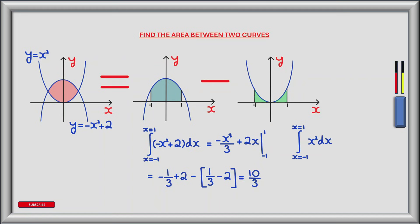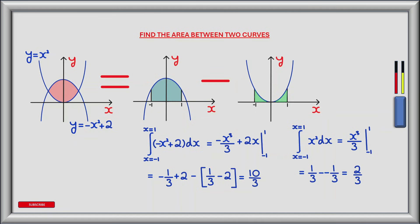Similarly, to find the area shaded in green, we can integrate the function y equals x squared between x equals minus 1 and x equals 1. The antiderivative of this is x cubed divided by 3, which we evaluate between x equals minus 1 and x equals 1. Plugging in the limits gives 1 third minus minus 1 third, which is equal to 2 thirds.